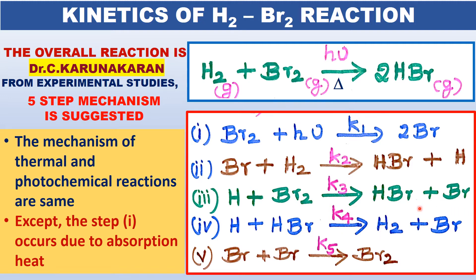Whereas in the case of hydrogen plus chlorine, this step does not occur — please remember, in the photochemical reaction between hydrogen and chlorine, this step does not occur. Because the HBr bond is weak, hydrogen attacks HBr to give back H₂ plus Br. Then Br collides with another Br at the walls to give Br₂.